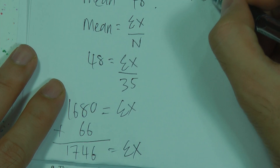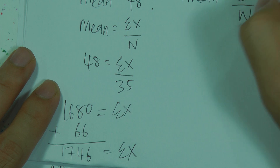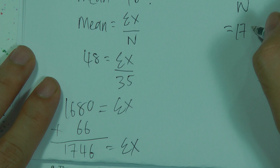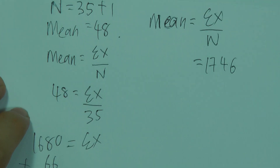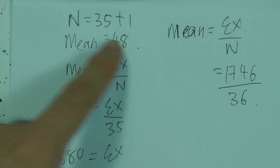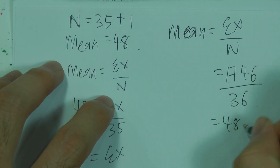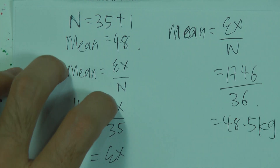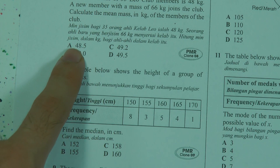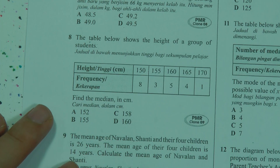To find the new mean: sum of x divided by n = 1746 / 36. Using a calculator, this gives 48.5 kg. So the new mean mass is 48.5 kg, and the answer is A.